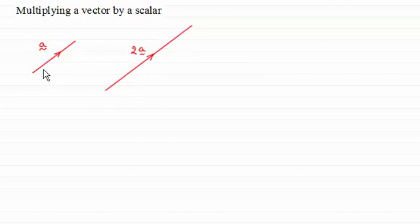If I multiply the vector a by, say, 3, then I get a vector that is 3 times as long, going in the same direction. And we call this multiplying a vector by a scalar. The scalar in this case is the number 2. If I multiplied it by 3, it would be 3.